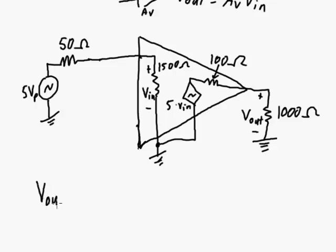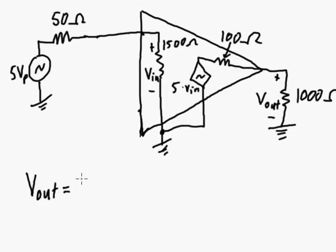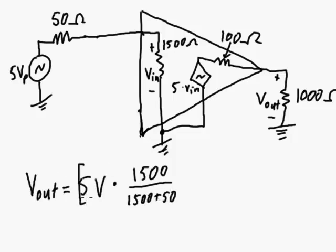So what we want to figure out is what is our V out. So V out is going to be determined by the 5 volt source. And then it's going to be attenuated somewhat by the voltage divider network at the input. So we're going to have 1500 over 1500 plus 50. So this block here is from the input.